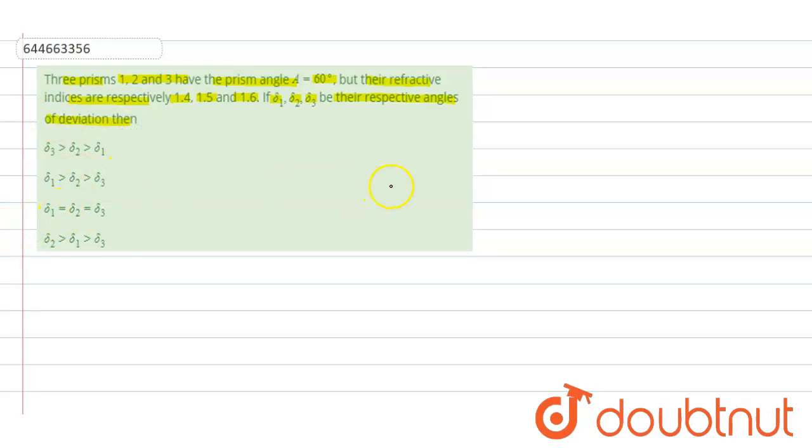For this question let us suppose the ray diagram through prism. So considering this is the prism here and this is angle of prism A, this point B and this point C, ABC is a prism.